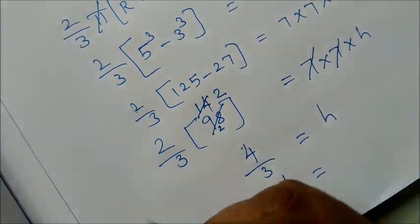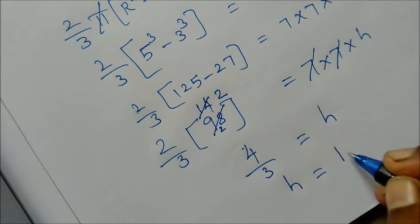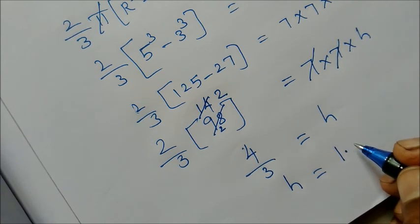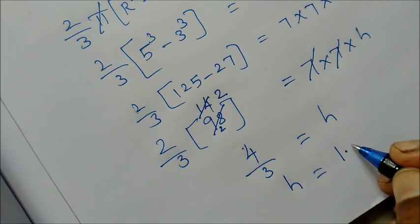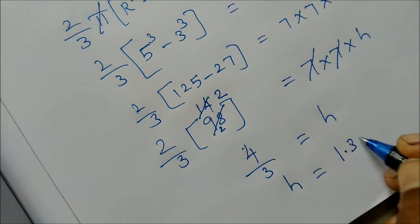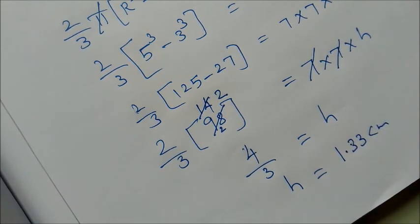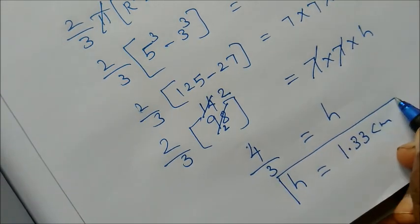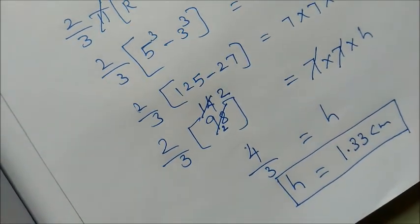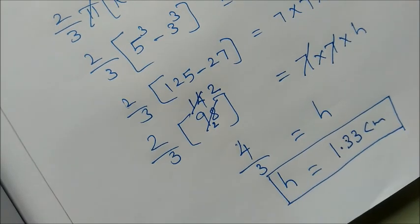h is equal to 4 by 3 divided, 1 time, balance 1. Decimal value, 10, then 3 times. Again 1, so 3. So 1.333 cm. This is the height of the cylinder. That's all. Thank you.